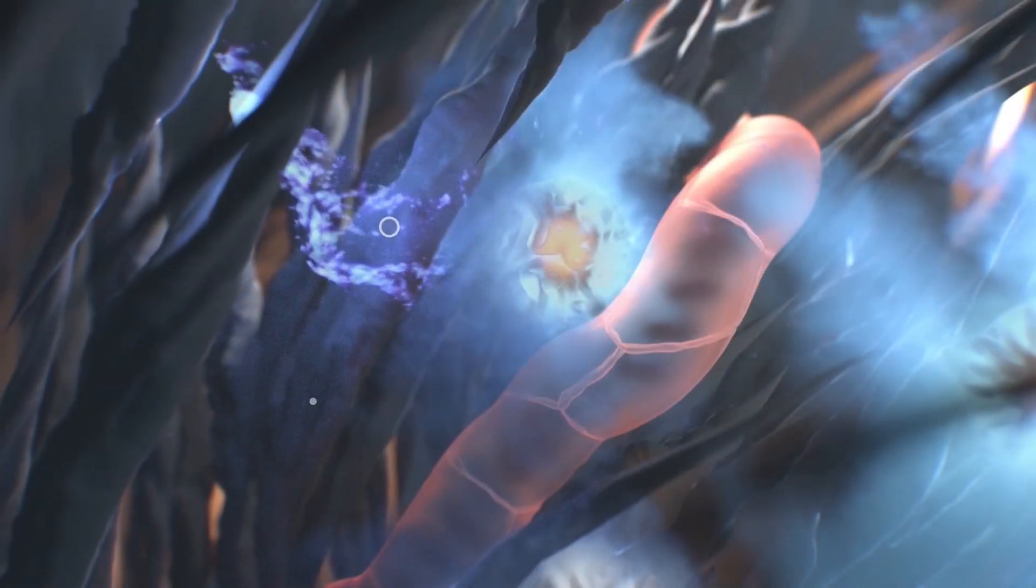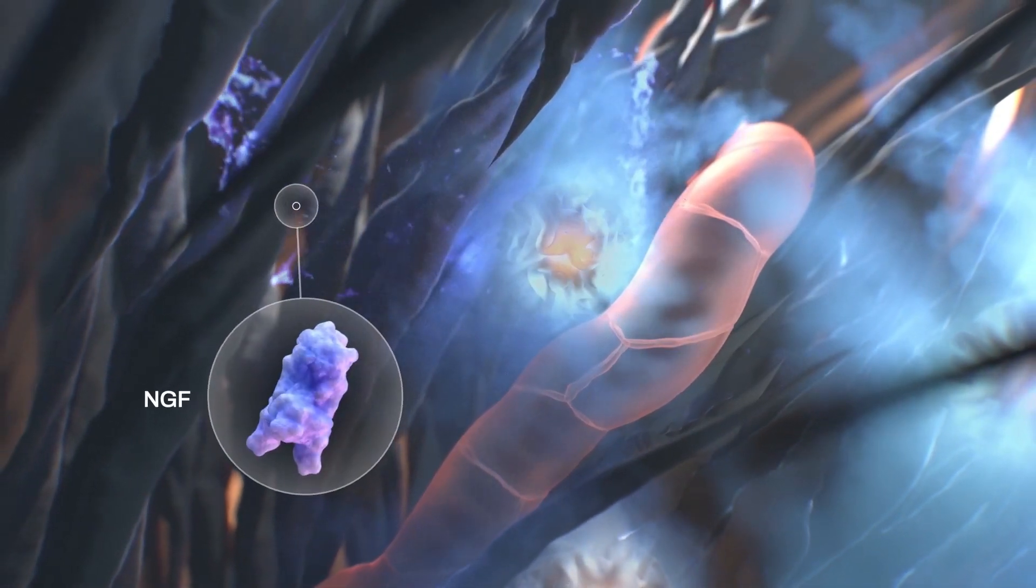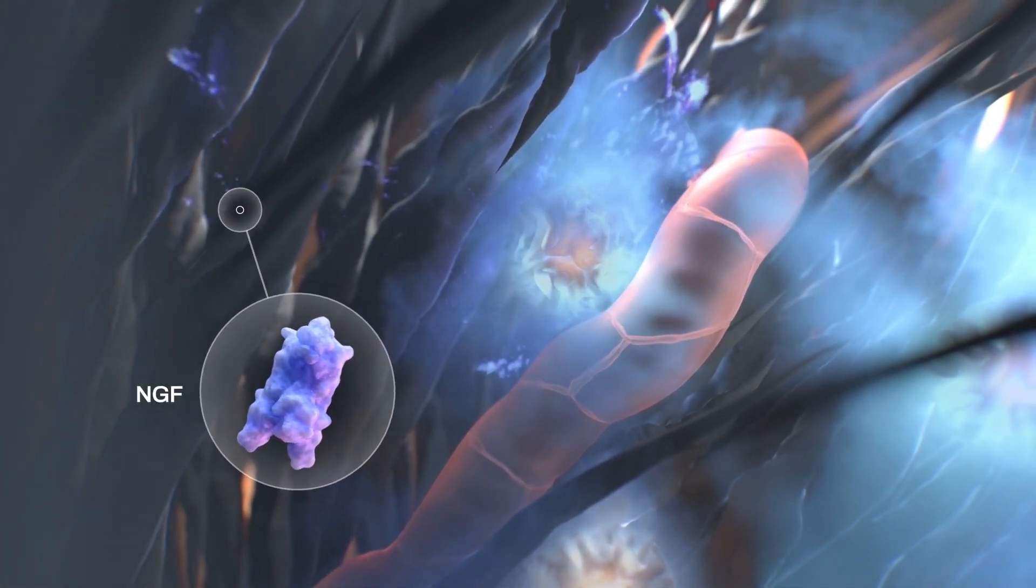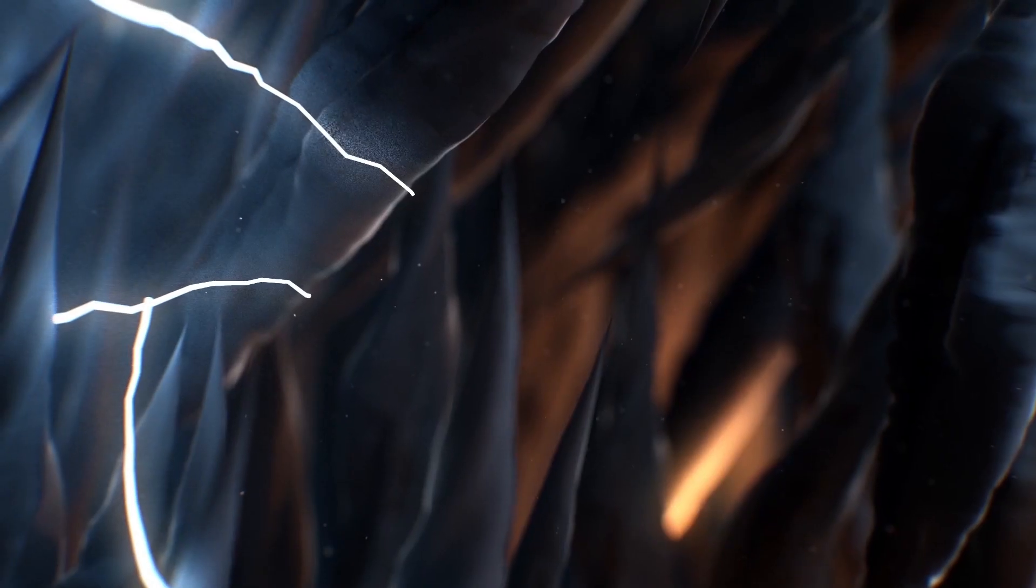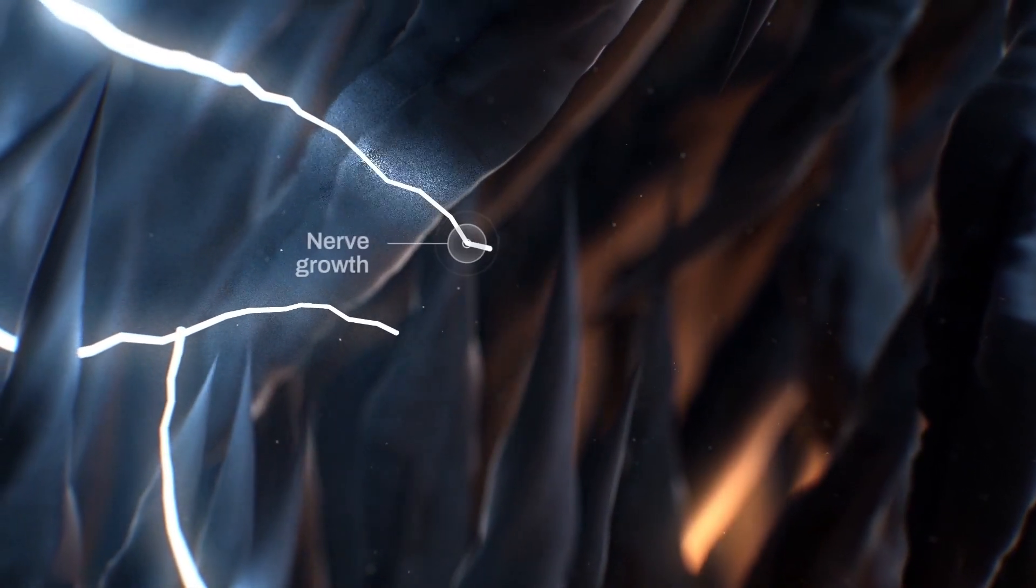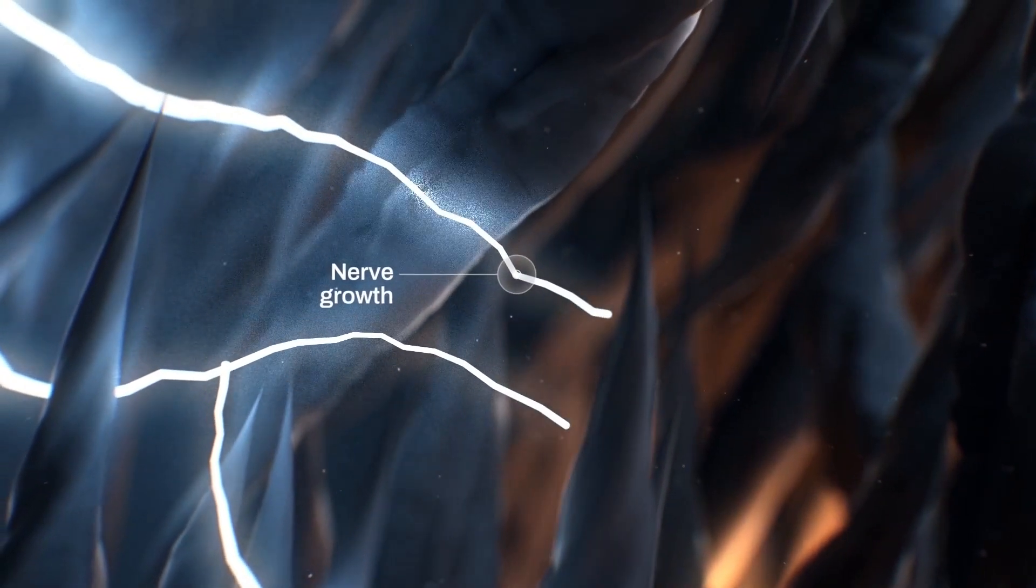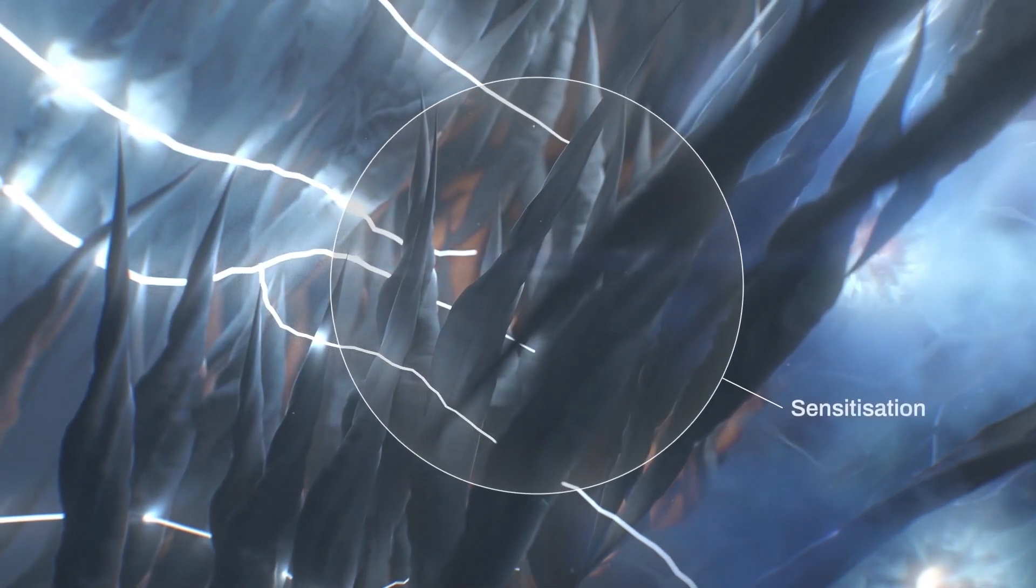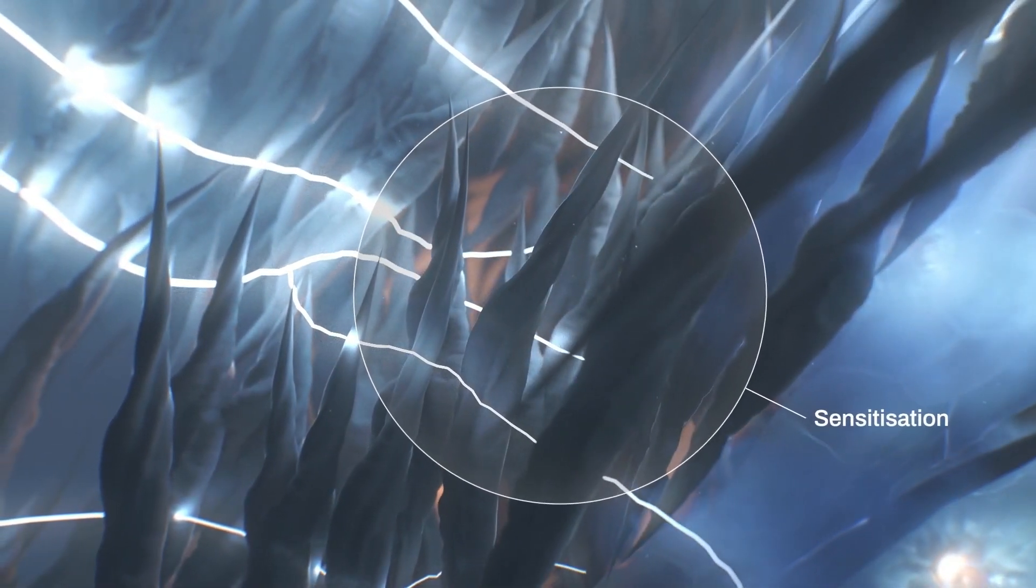NF-kappa-B activation also leads to the production of nerve growth factor, or NGF. NGF in the synovium, chondrocytes, and subchondral bone stimulates and activates pain-sensing nerve cells, intensifying joint pain.